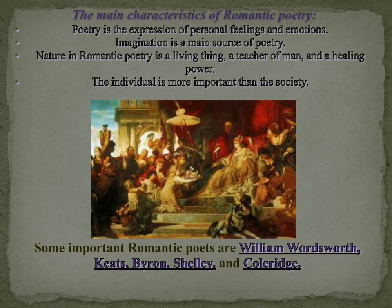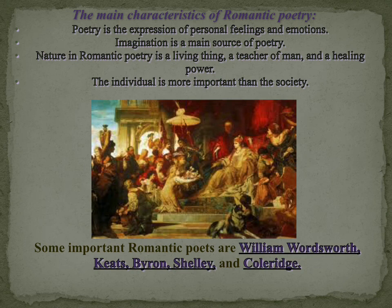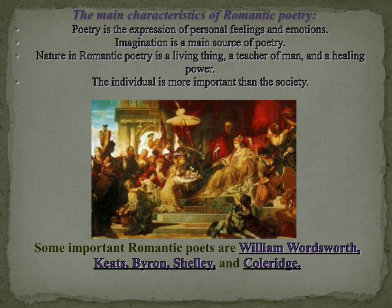The beginning of the Romantic triumph is found by general consent in the publication in 1798 of the little volume of Lyrical Ballads, which contained the first significant poetry of Wordsworth and Coleridge. Even during this great period, however, Romanticism had for a time a hard battle to fight, and the chief literary fact of the period was the founding and continuous success of the first two important English literary and political quarterlies — The Edinburgh Review and the Quarterly Review — which in general stood in literature for the conservative 18th century tradition and violently attacked all the Romantic poets.